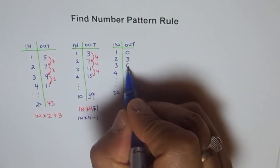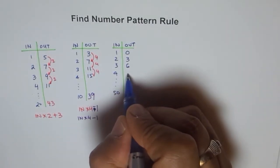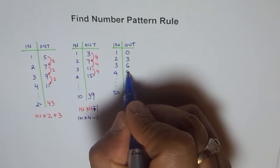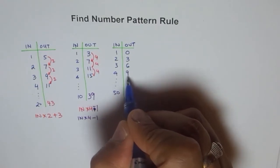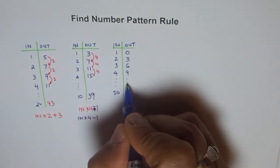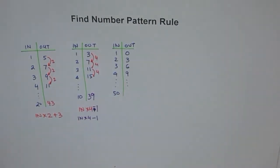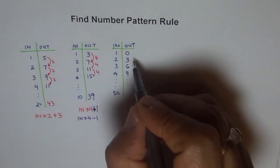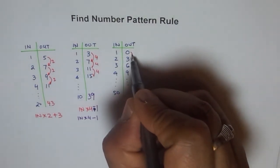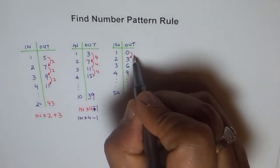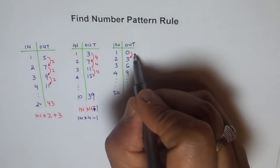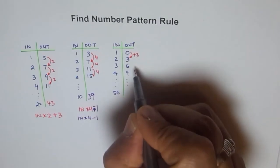Let's make one more pattern. Starting with some values: input 1 gives output 0, and then 3, 6, 9. We're adding 3 each time. Every time you go from one number to the next, you do plus 3. So in our formula, we have input times 3. Now we should figure out whether we have to add or subtract.